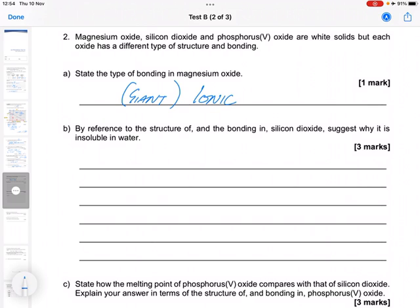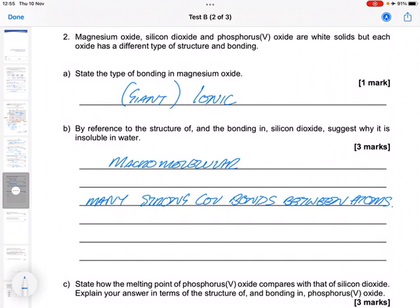By reference to the structure of and the bonding in silicon dioxide, suggest why it is insoluble in water. Well, this is macromolecular, which has many strong covalent bonds between atoms, which water cannot overcome or break. So there's your three marks there.